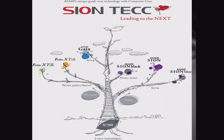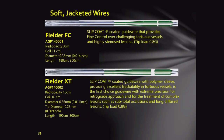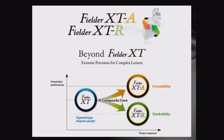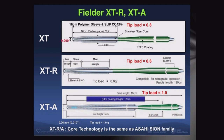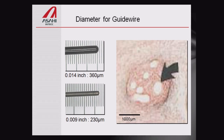This is the Sion family, called Asahi, which is a core-to-tip wire. Fielder FC and Fielder XT wires have tip loads of 0.8g, 0.6g, and 1g respectively. Fielder XTR is used for intraplaque collateral invisible channel tracking. Sometimes you can't see any flow in the CTO, but there are micro-channels less than 1000 microns — a 0.014-inch guidewire won't go through, but Fielder AXT or XTR, which is less than 0.010 inches, can track through these invisible collateral channels.